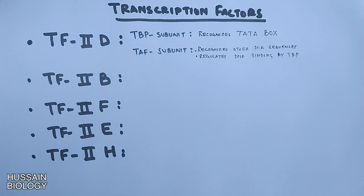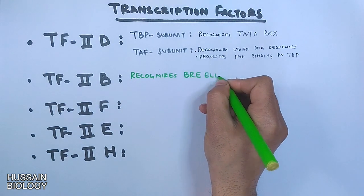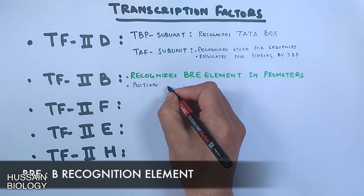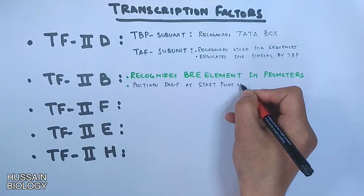Then we have transcription factor 2B. It has a role in recognition of BRE element in promoters on DNA, and it also positions RNA polymerase at the transcription starting point.